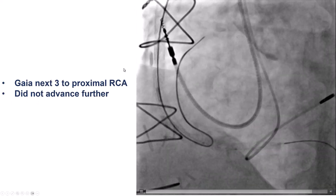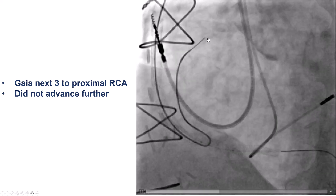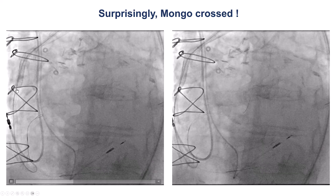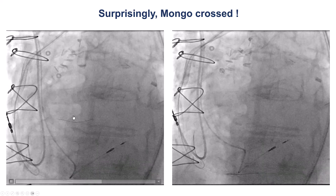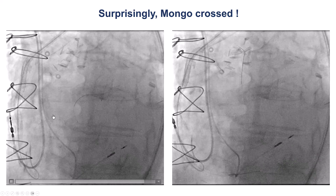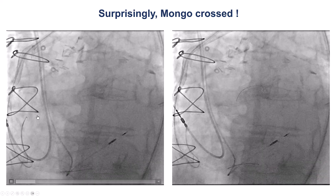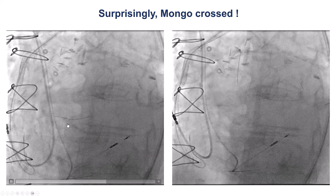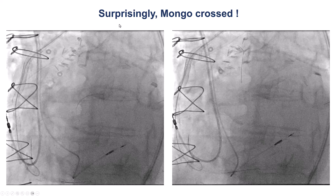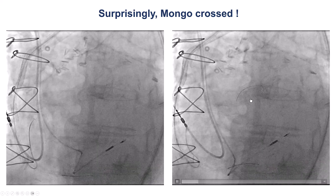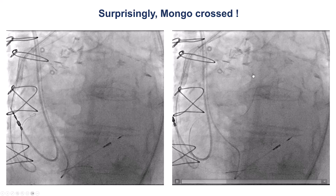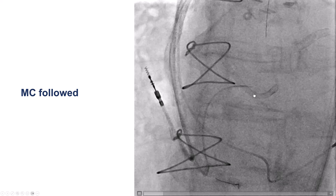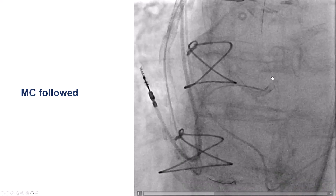We tried various wires including the Gaia 3, but could not go further. So we switched to the Gladius Mongo, with the idea to knuckle it and go to the ostium and then try to find ways to puncture. To our great surprise, the wire actually sailed — going into branches, then knuckling, then traveling along the course of the RCA and entering into the aorta. The wire is now out in the aorta, moving freely with the blood flow. Not very common, but a very nice surprise.